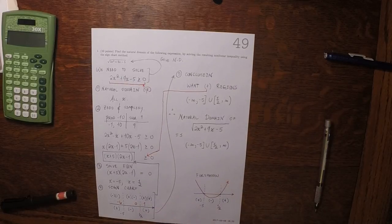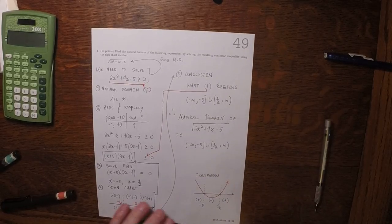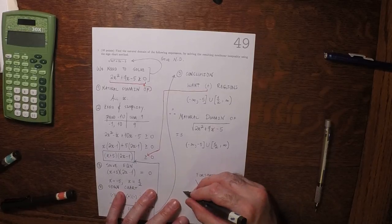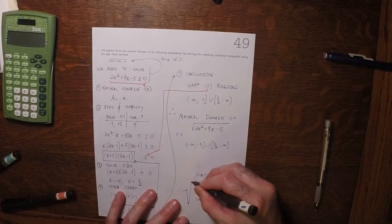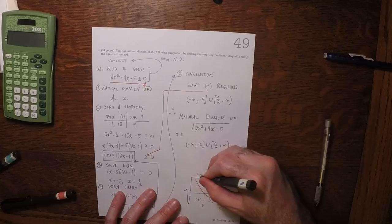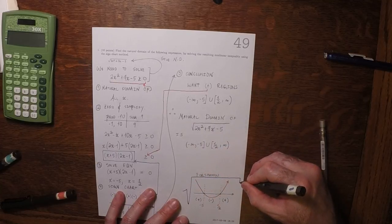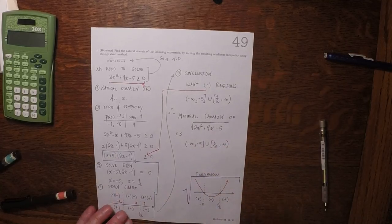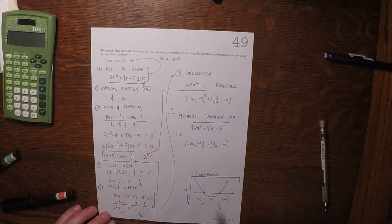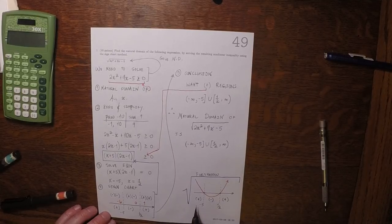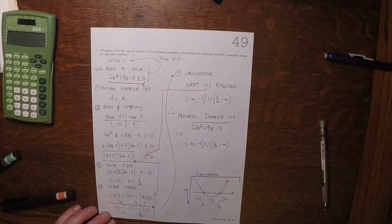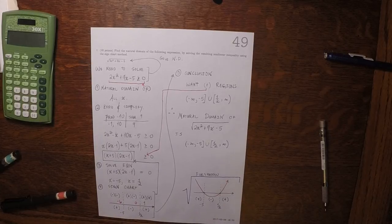And what's being asked is that we want to compute the radical of this, the square root of this. And when can you do that? Well, you can do it when you're in a positive region. You can do it when you're there or there. And that's the answer.